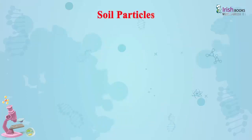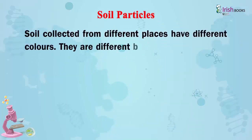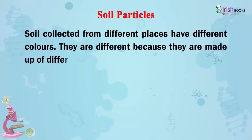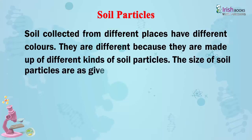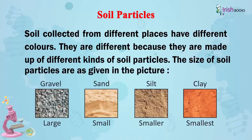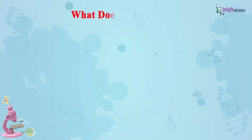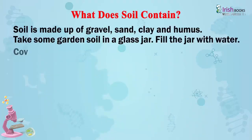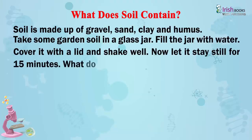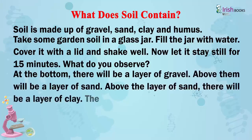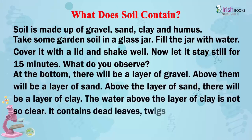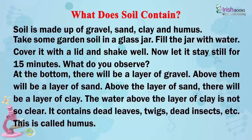Soil particles. Soil collected from different places have different colors. They are different because they are made up of different kinds of soil particles. The size of soil particles are as given in the picture. Soil is made up of gravel, sand, clay, and humus.